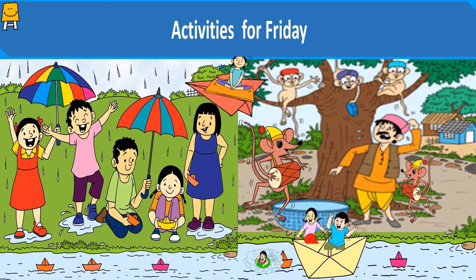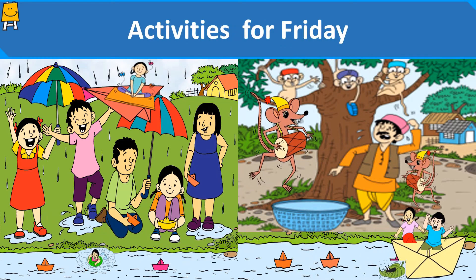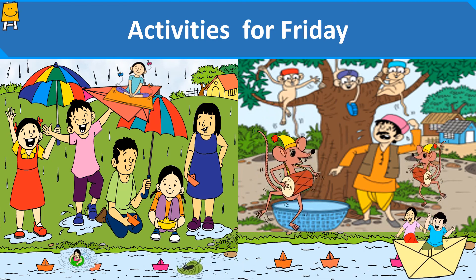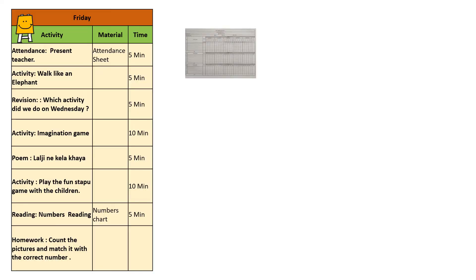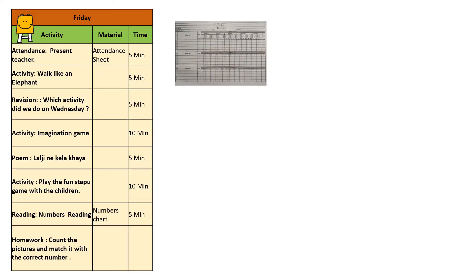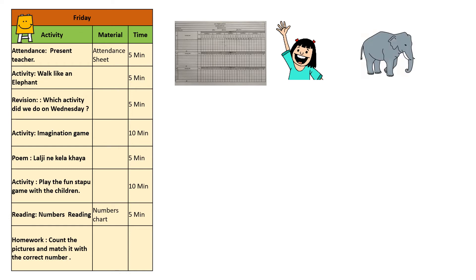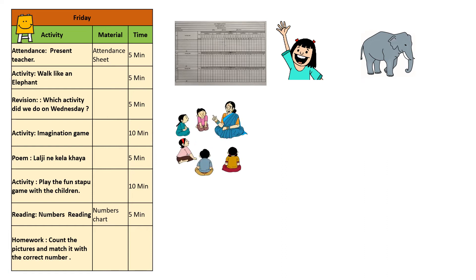Activities for Friday. Attendance: when their name is called out, ask the children to stand up and say 'Present, teacher.' Walk like an elephant: ask the children to imitate an elephant's walk. Revision: ask the children to discuss the activities that were done on Wednesday.